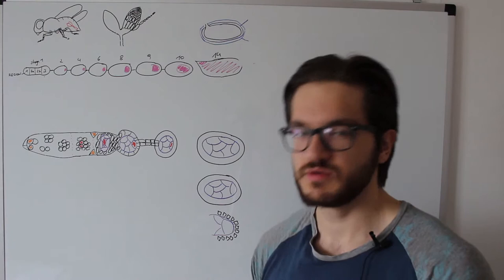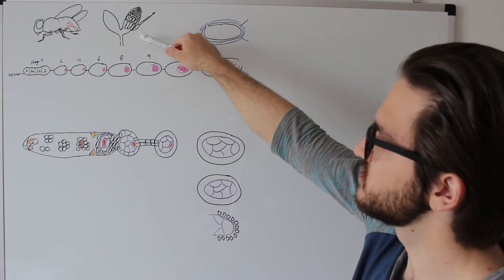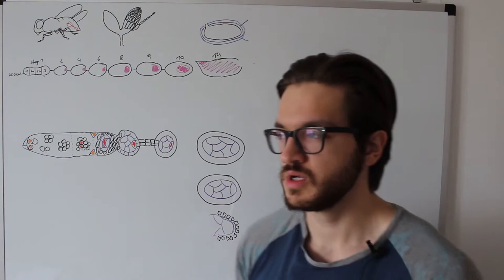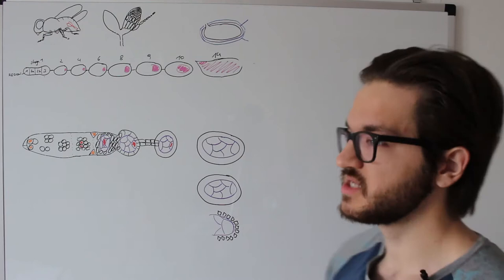One such ovary contains basically about 16 to 20 ovarioles. One such ovariole basically looks like this structure here. This ovariole contains two axes, a long axis and a short axis.